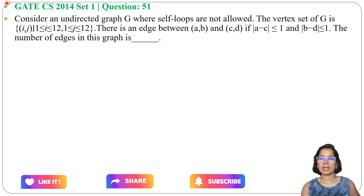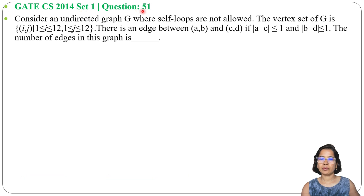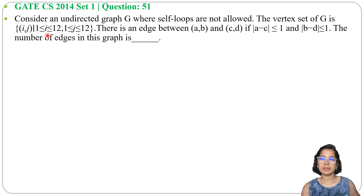Let's solve a previous question of graph theory. This question is from GATE CS 2014 Set 1, question number 51. Consider an undirected graph G where self-loops are not allowed. The vertex set of G is (i, j) where i ranges from 1 to 12 and j ranges from 1 to 12. There is an edge between (A,B) and (C,D) if |A minus C| ≤ 1 and |B minus D| ≤ 1. Find the number of edges in this graph.